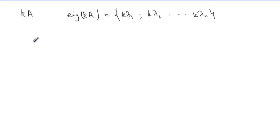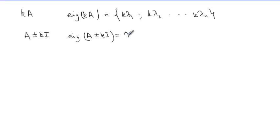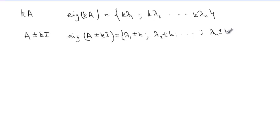Also, if we perform the transformation A ± kI, where I is the identity matrix and k is a scalar, then the eigenvalues of (A ± kI) are {λ₁ ± k, λ₂ ± k, ..., λₙ ± k}. Each eigenvalue of A simply shifts by ±k.